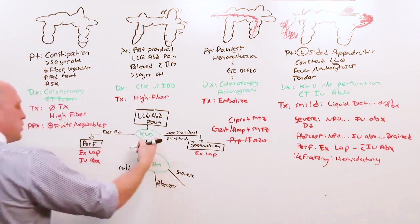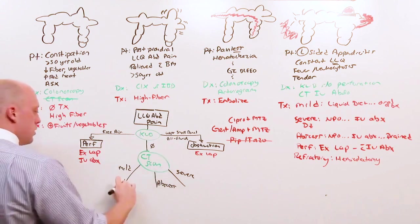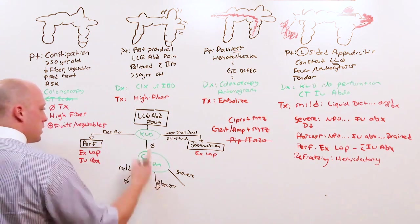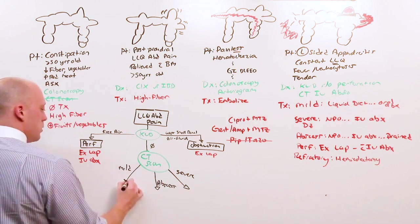The reason why I say you could skip the KUB altogether is because the CT scan is going to show you perforation or obstruction as well. But if given the option between them, I would pick the KUB first because it's cheaper, especially if the person were ill.